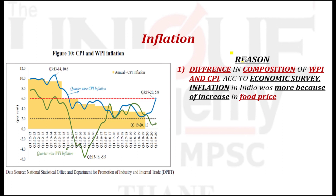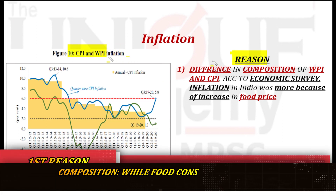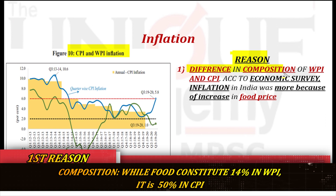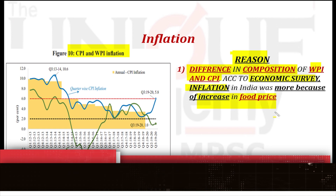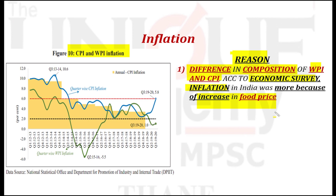The first reason for the difference between CPI and WPI is the difference in composition. In CPI, the weightage of food is approximately 50%, while in WPI the weightage of food is only 14%. According to the economic survey, the CPI-WPI divergence occurred because of an increase in food prices. Because food has a higher weightage in CPI, CPI went up significantly, while WPI remained low due to food's lower weightage there.